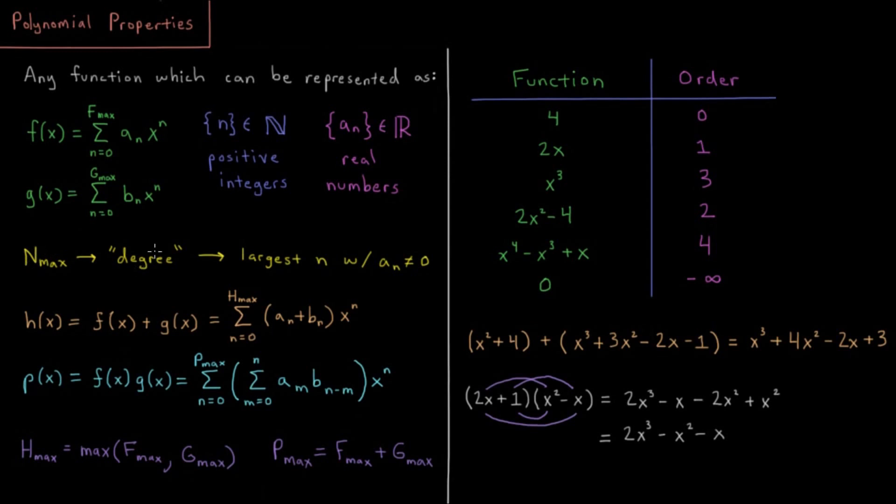And also going back to the order here, so the order of various functions that we might be familiar with with some more numerical examples. We have 4 is a constant, so that's order 0. We have 2x is order 1, linear. x cubed is cubic, that's order 3. 2x squared minus 4, that has a quadratic term and a constant term, so quadratic is the biggest, so that's a 2 for that exponent there. x to the 4th minus x cubed plus x has 4 as the biggest exponent, that's order 4.